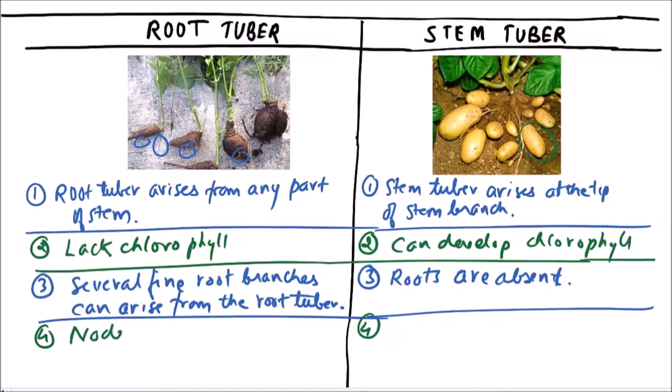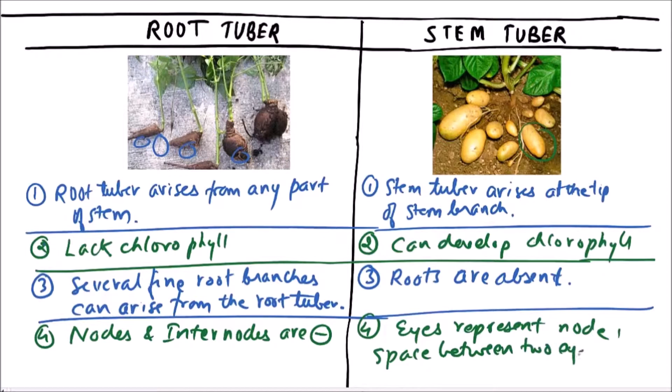Nodes and internodes are absent in root tubers because these are modifications of roots. But in the case of stem tuber, eyes represent nodes. So nodes are present and the space between two eyes can be considered as internodes.